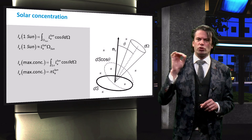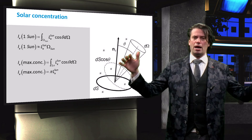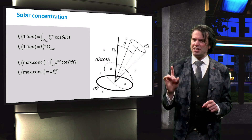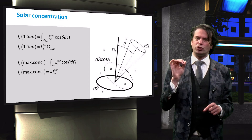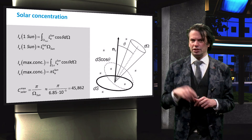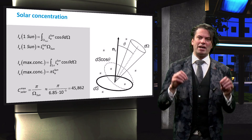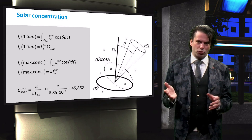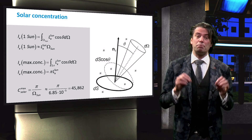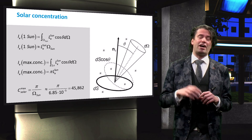At maximal concentration, the solar cell receives light from the whole hemisphere. Therefore, the maximal irradiance equals the radiance from the sun multiplied by pi. The theoretical maximal concentration factor is obtained by dividing the maximal irradiance by the standard one. As we can see, the maximum concentration can be increased by a factor of over 45,000.